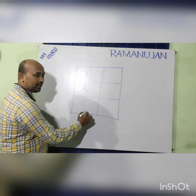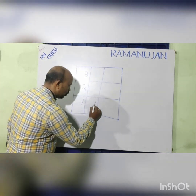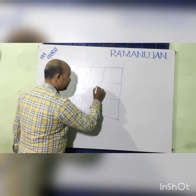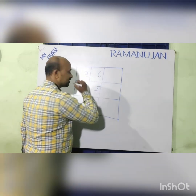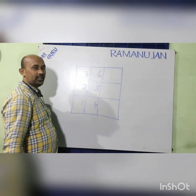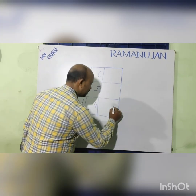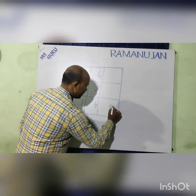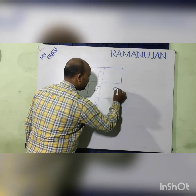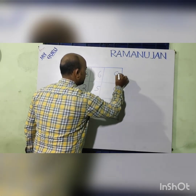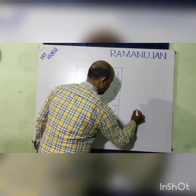Then come to the second column: 4, 5, 6. Then come to the third column, that is 7, 8 and 9.